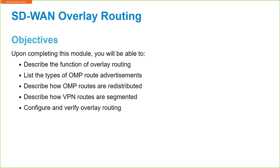We're going to talk about really what the function is of overlay routing. We're going to talk about the different types of OMP route advertisements that we're going to see within this section. How are those OMP routes redistributed into our VPN, into our SD-WAN fabric? And then we're going to talk about how VPN routes are segmented as well. And the last thing we'll talk about is how we configure and verify our overlay routing.